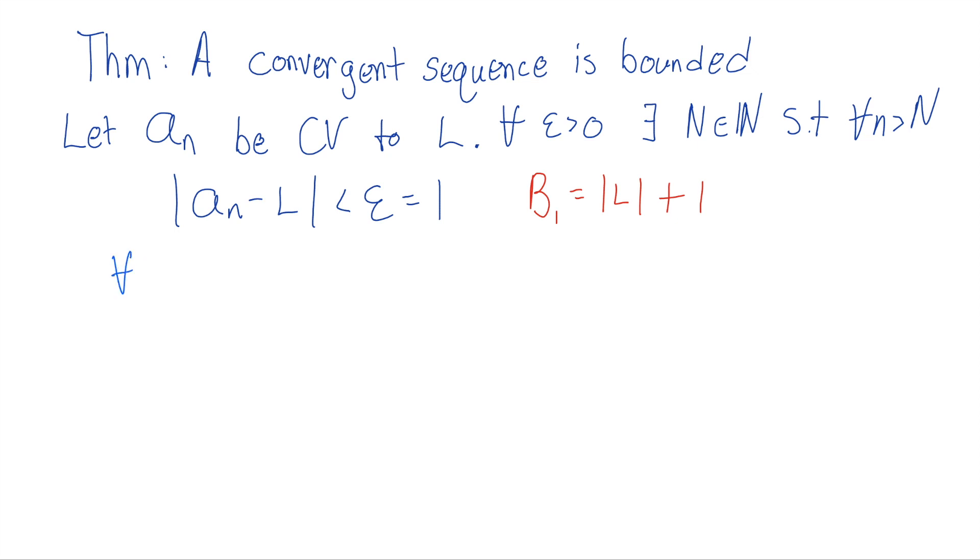For all little n greater than N, and I know this statement above is true. But let's do this. Let's take our sequence. Remember we're trying to show that our sequence is bounded so that in absolute value it's less than some number. We're going to do the usual trick. We're going to add by zero here. If I subtract L and I add L, that's just adding by zero.